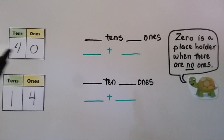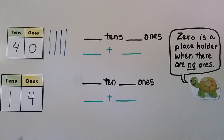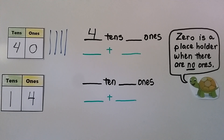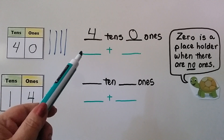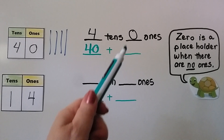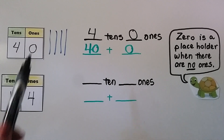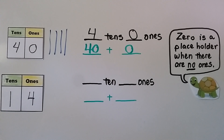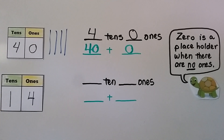Here we have forty. There are four tens, so we can draw four lines. There are no ones — zero ones — so we don't need to draw any dots. We write it as four tens and zero ones. Zero is a placeholder when there are no ones. When a place value has no value, we put a zero there to hold the place, so the tens won't shift into the ones place. The zero pushes it into the correct place value.